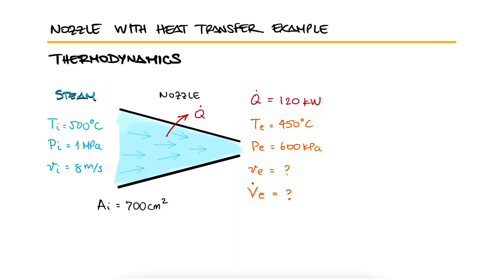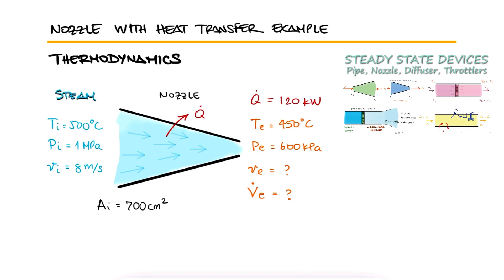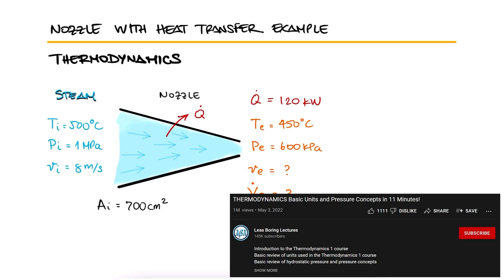Remember to pause here and try to solve this problem yourself before watching the solution. This is the first example for the Pipe Flow, Nozzles, Diffusers and Throttling Devices main lecture. The link to that 9 minute lecture, the other examples on this topic and all the other lectures of the Thermo course are found in the description below.